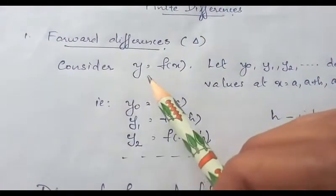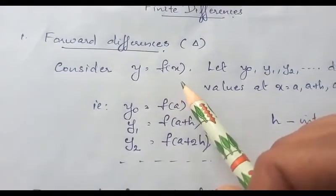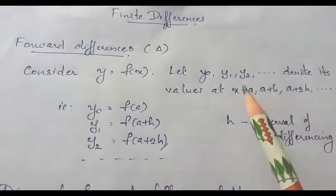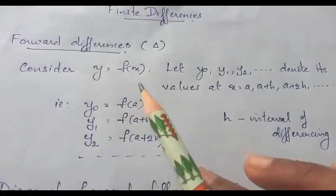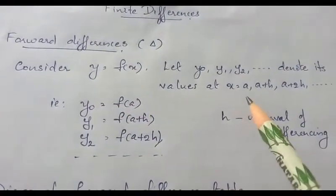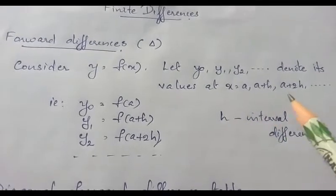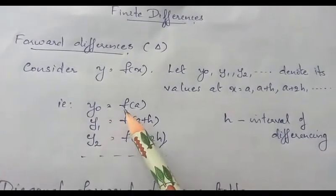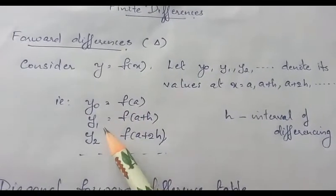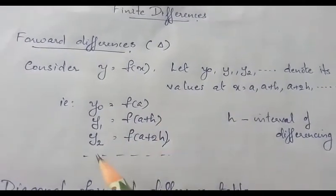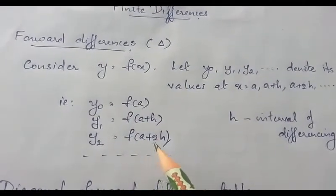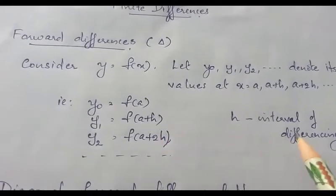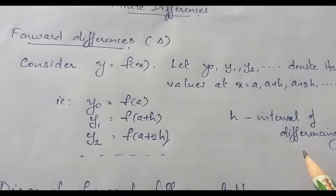Consider the function y equal to f of x, where y0, y1, y2, etc. are the values of y when x has the values a, a plus h, a plus 2h, etc. That is, y0 is equal to f of a, y1 equal to f of a plus h, y2 equal to f of a plus 2h, etc. Where h is the interval of differencing.